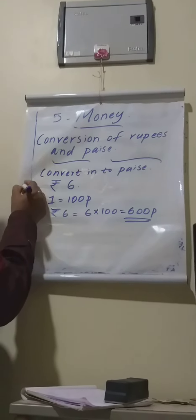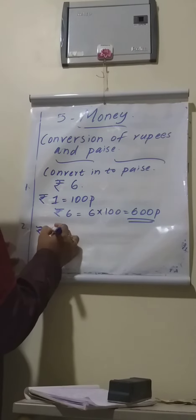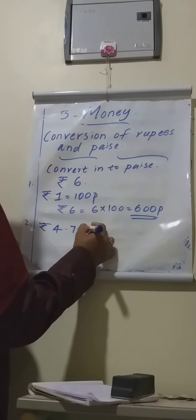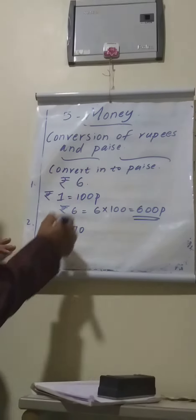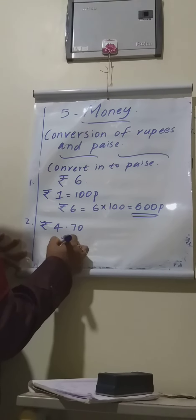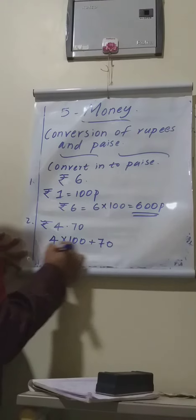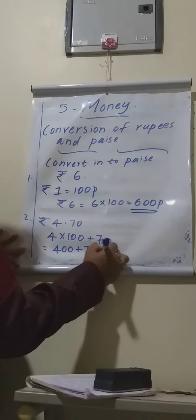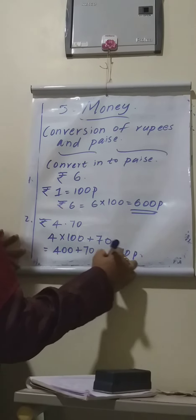Next, rupee 4 and 70 paisa. How to convert into paisa? 4 into 100 plus 70 is equal to 400 plus 70, is equal to 470 paisa.